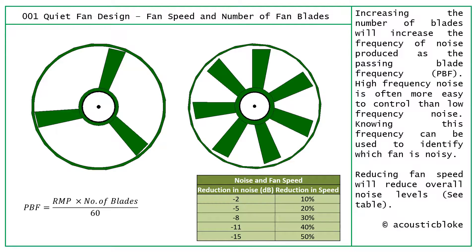The first thing we can do to alter noise from a fan is simply increase the number of blades. By increasing the number of blades, we can change what's known as the blade passing frequency.